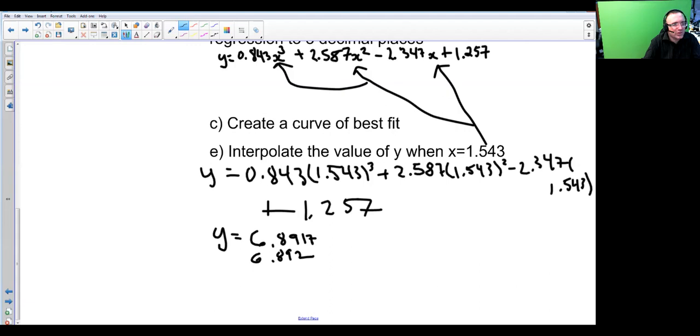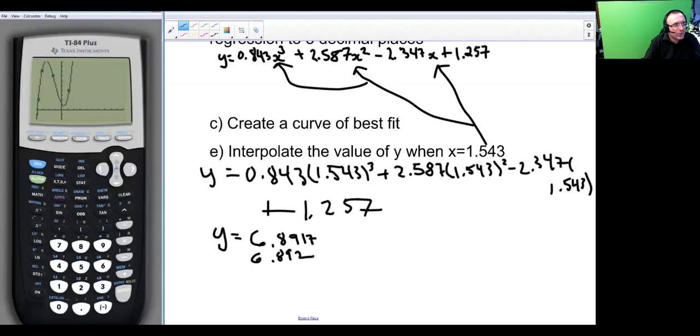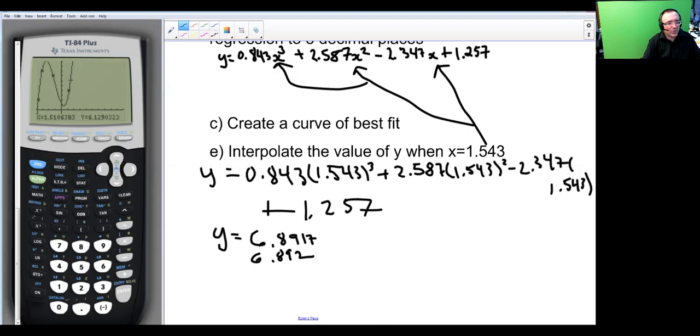If you go back to the graph and trace the values, we want x to be 1.543. It's approximately right there. It looks like it's in between that, so we're on the right track here.